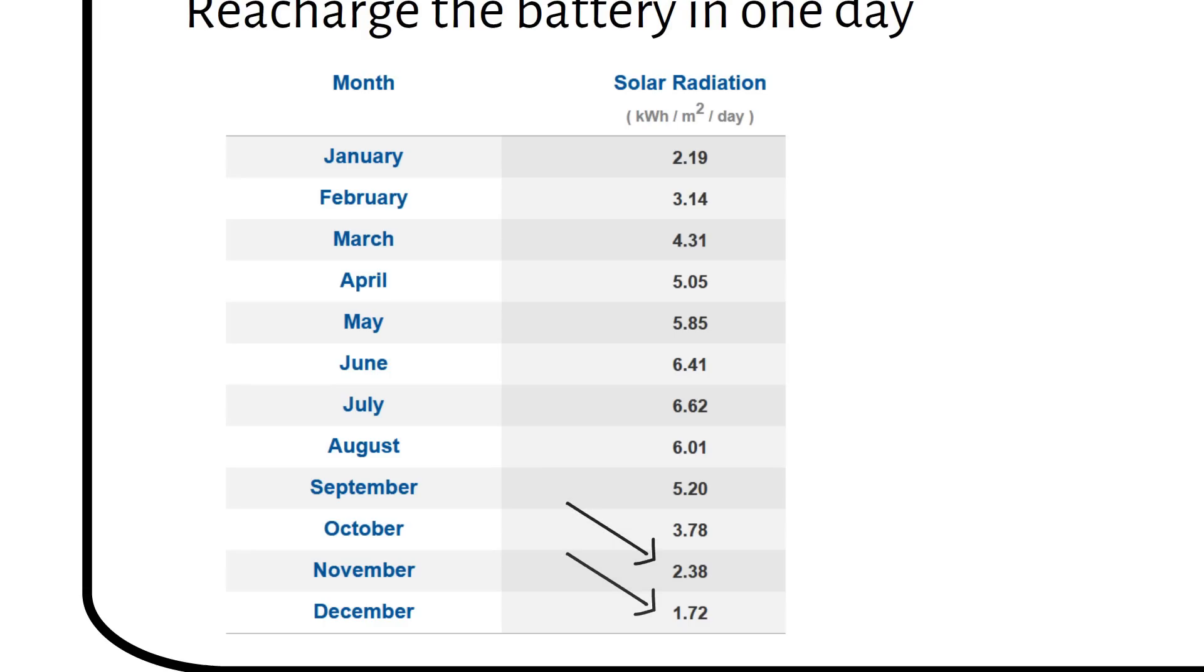We can see that November, December and January have the fewest sun hours. If we have to size the solar array for these months, we will need many solar panels which will be costly.